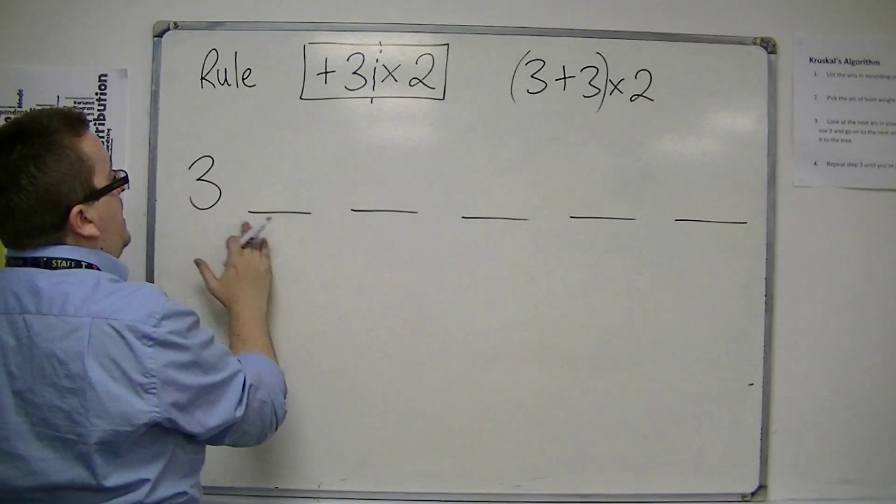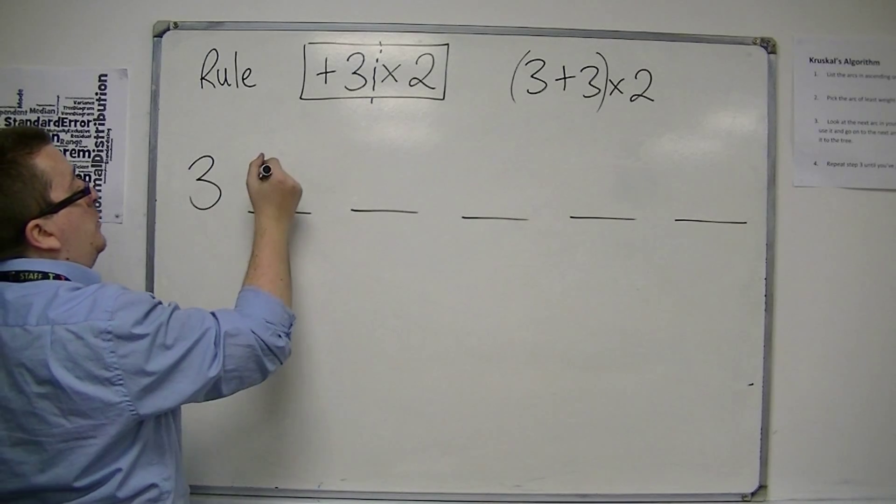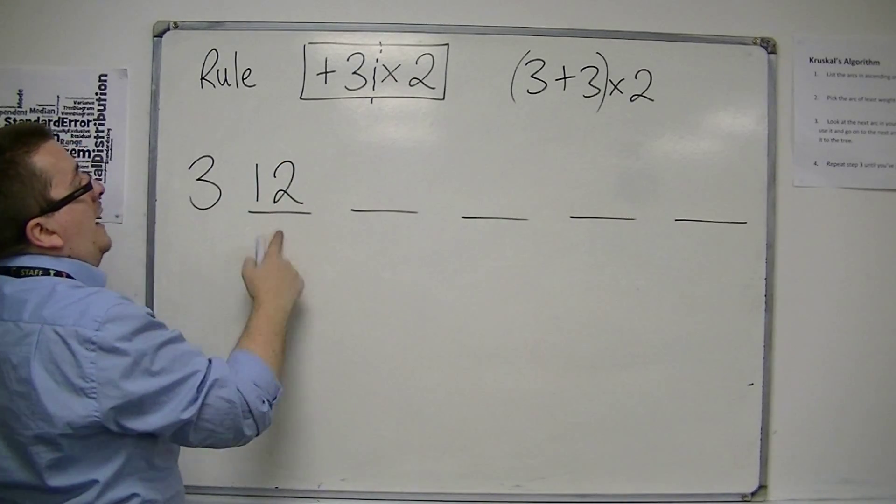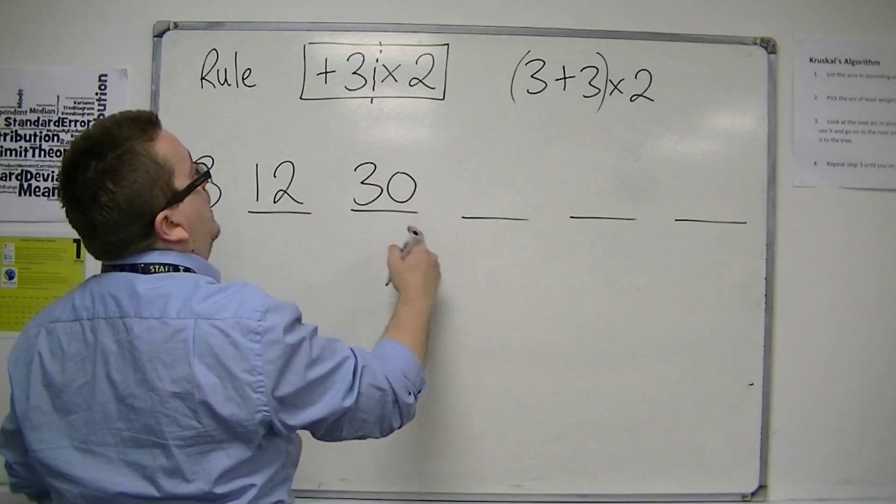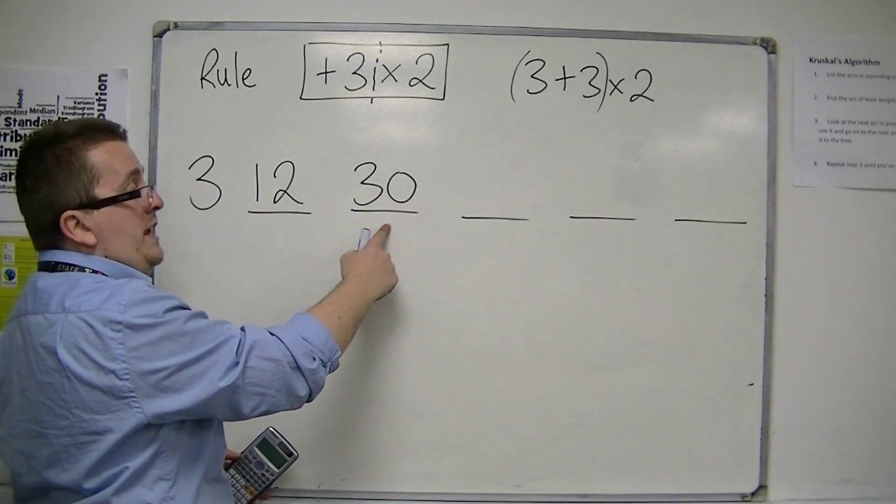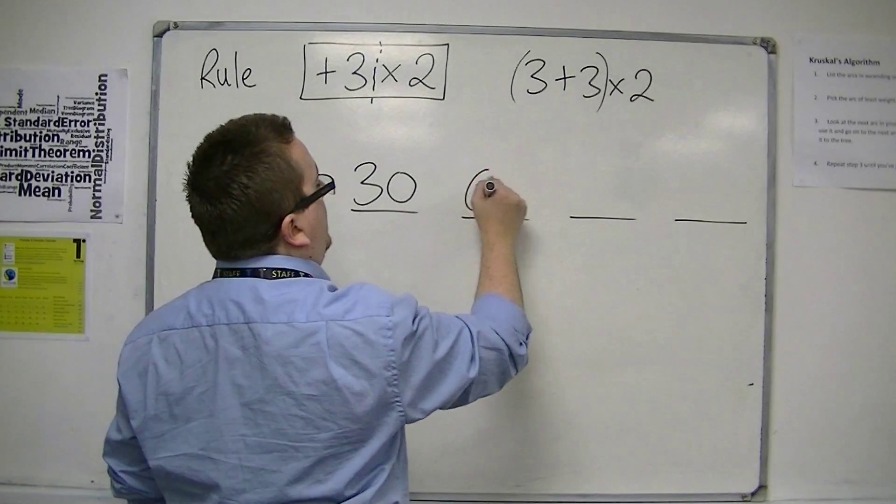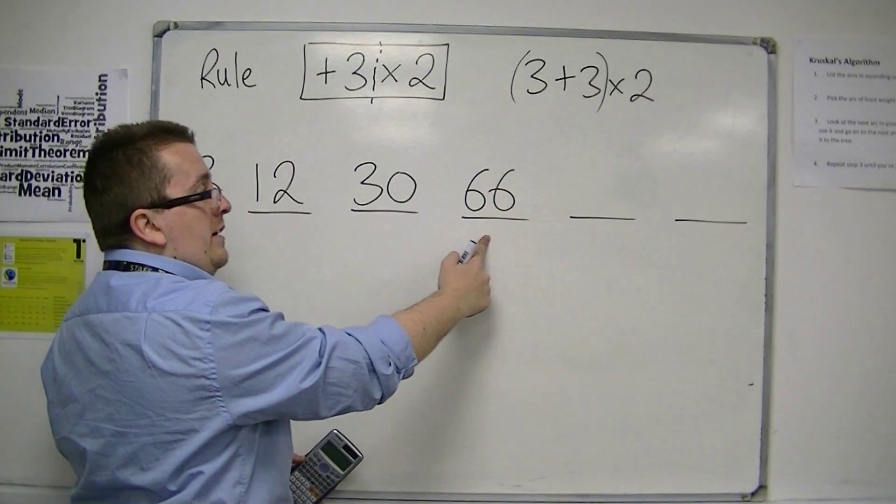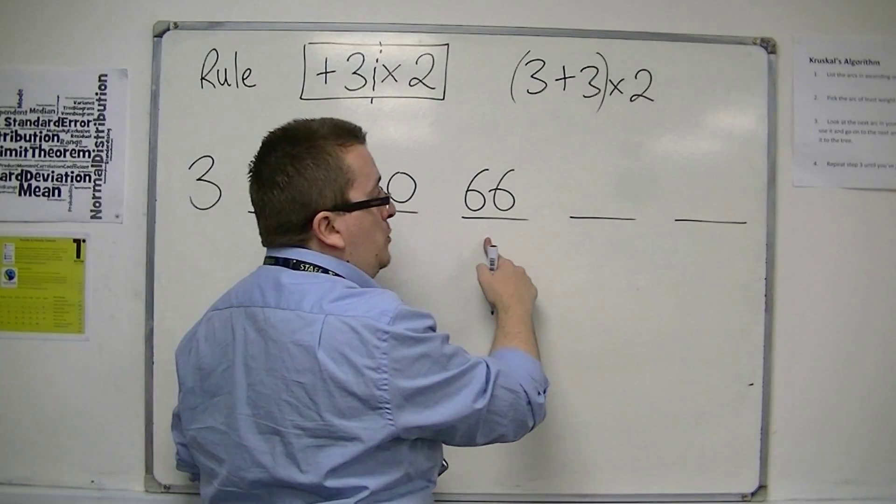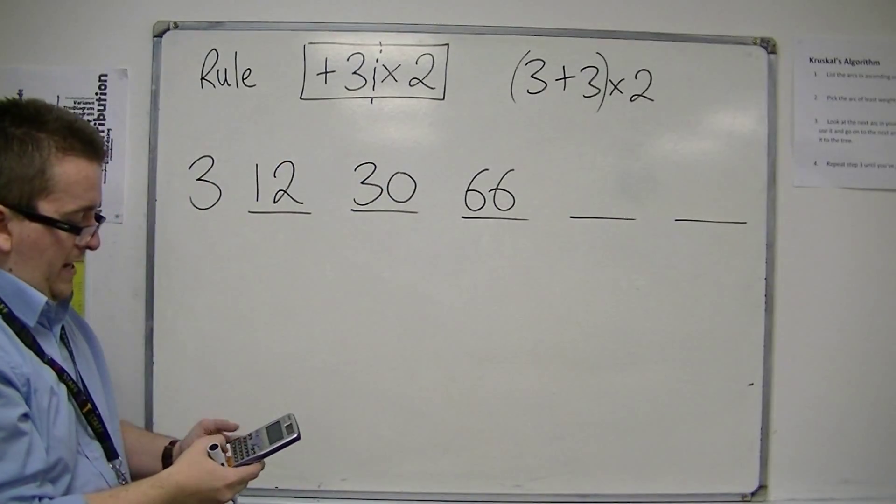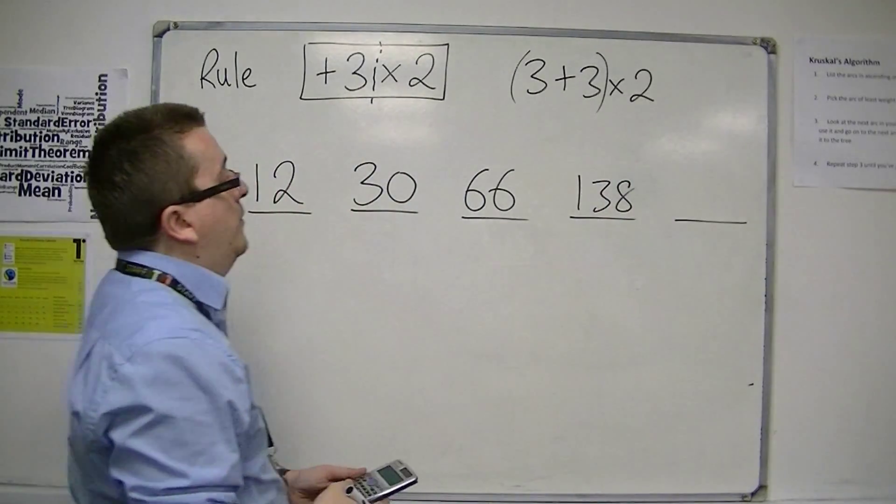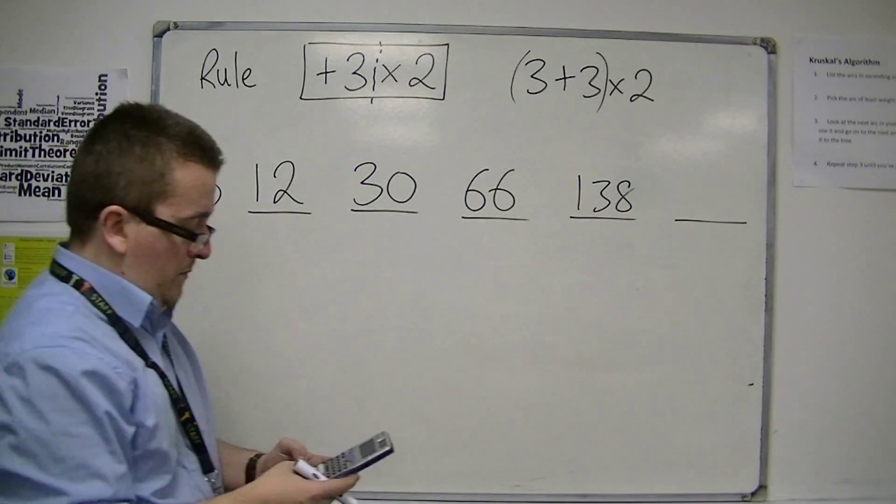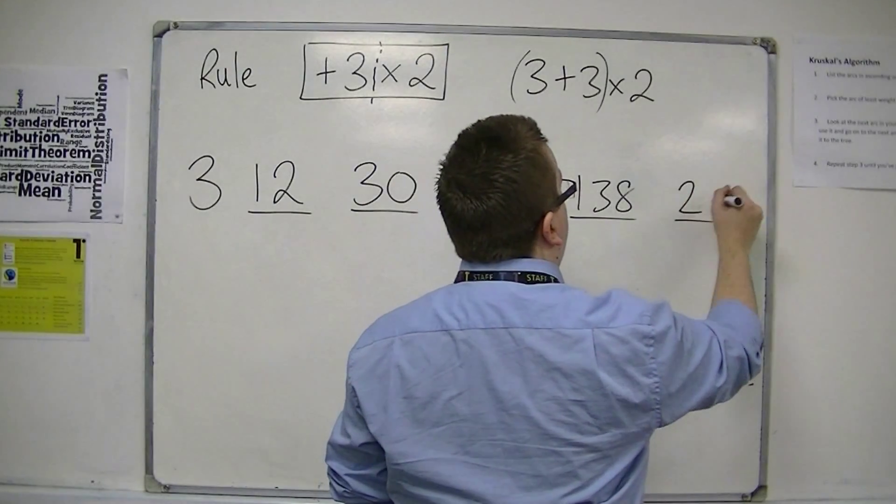So add 3 is 6, times by 2 is 12. Add 3 is 15, times by 2 is 30. Add 3 is 33, times by 2 is 66. Add 3 is 69, times by 2, sorry I'm starting to lose count, is 138. Then add 3 and then times by 2 is 282.